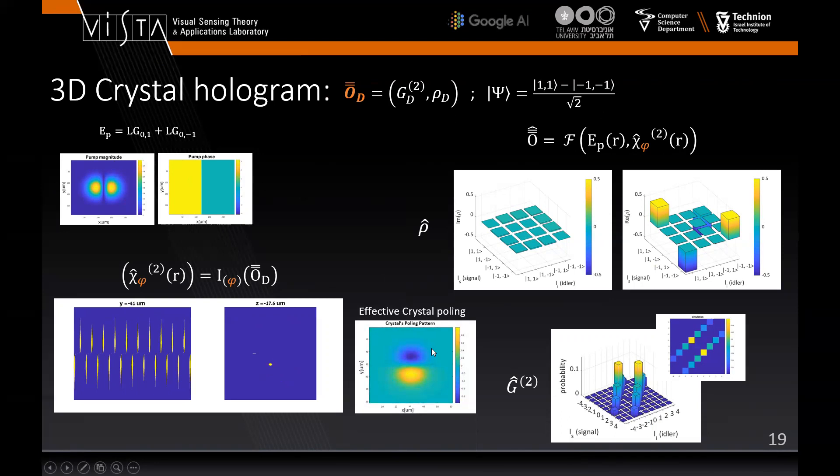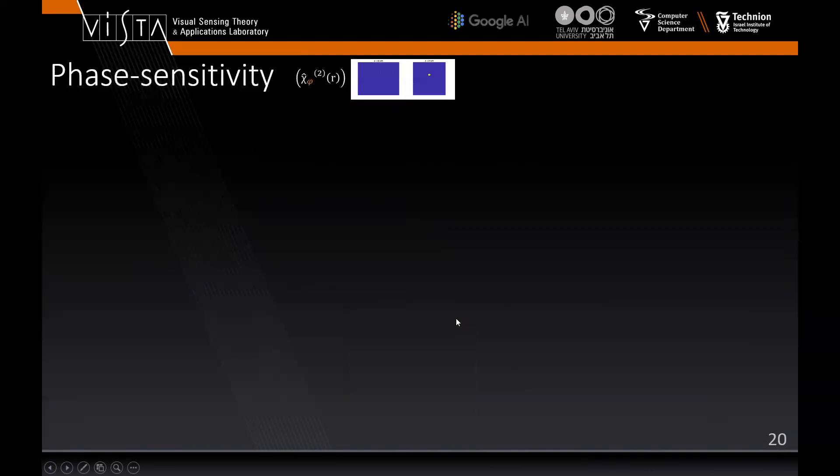Interesting note, if we looked at the effective poling that was learned, we see that we learned a superposition of Laguerre-Gauss 0,1 minus 0,-1 by the hologram. That state will essentially result in eliminating the diagonal elements of the coincidence count rates as defined by our desired state. Our next step is to keep the parameters of the crystal and vary the relative phase of the pump to see how it is reflected in the output.